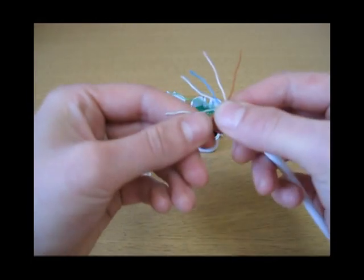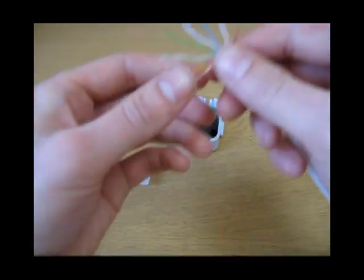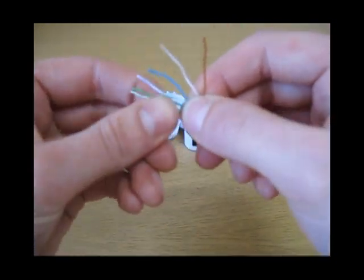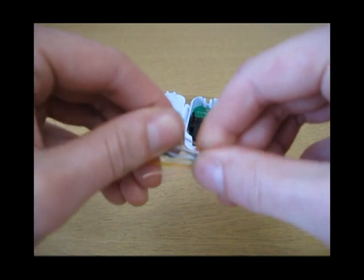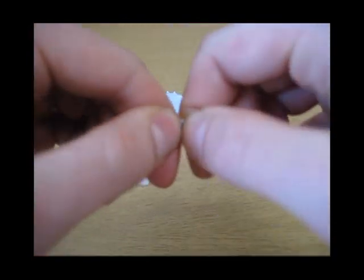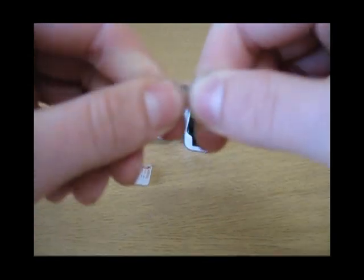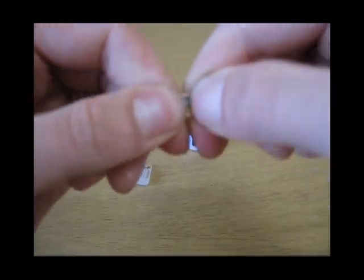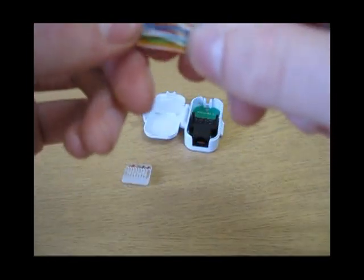Once you've got them like this you will sort of group them together and make them into a ribbon shape.